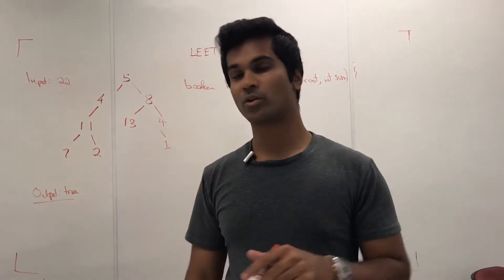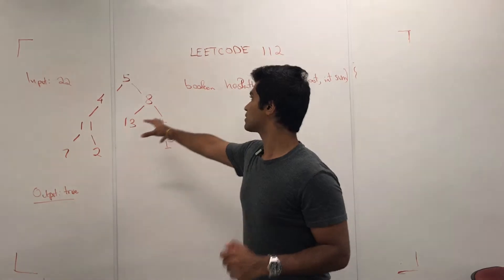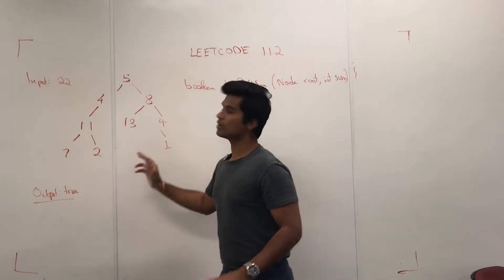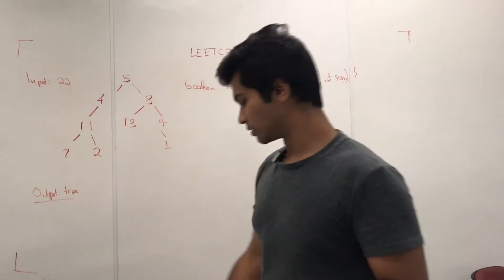So let's get into it. I'm going to draw the recursive values, and then I'm going to show you how the Booleans actually bubble up to the top to return true or false.